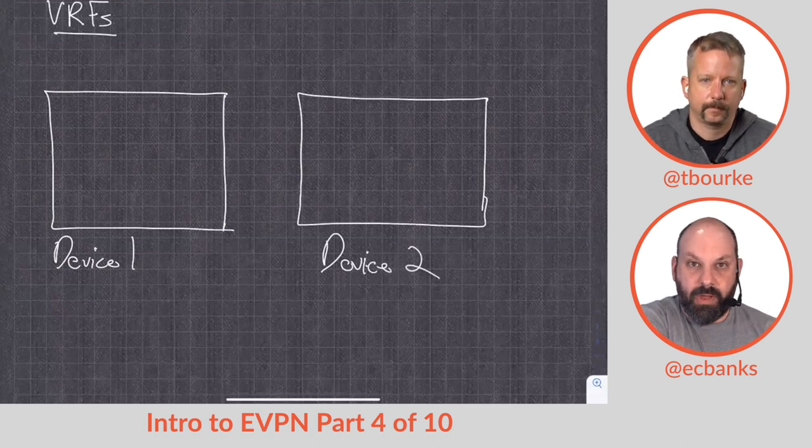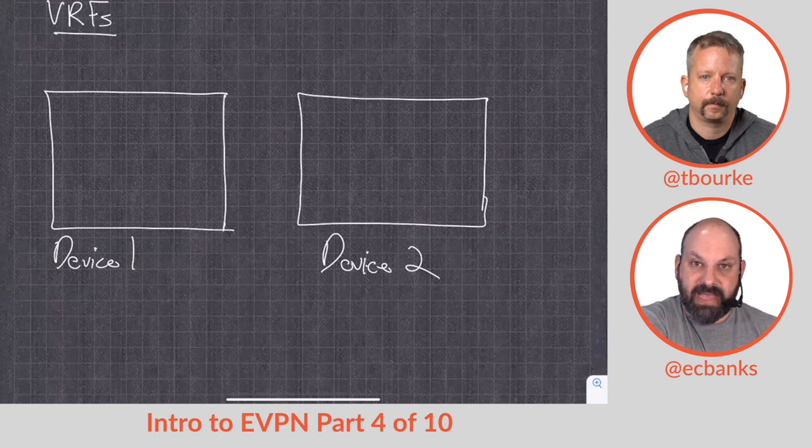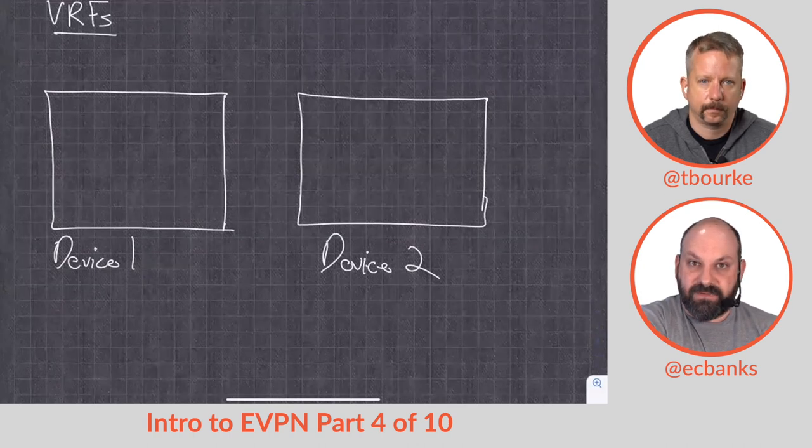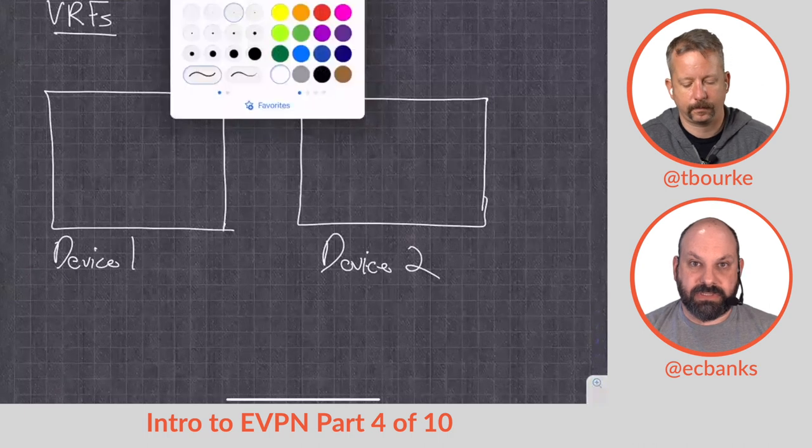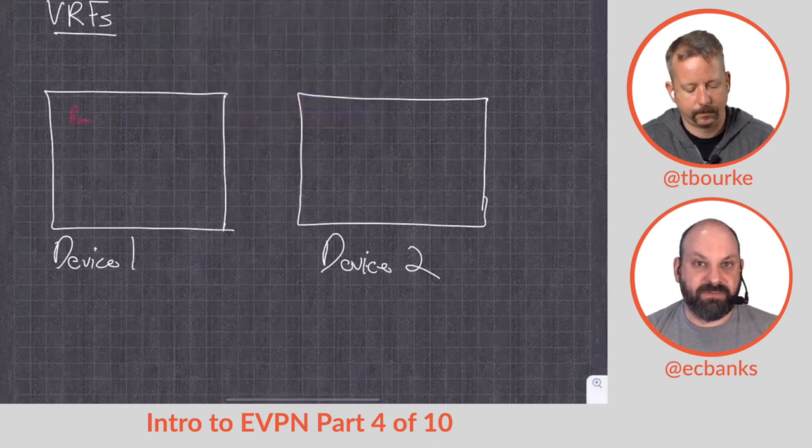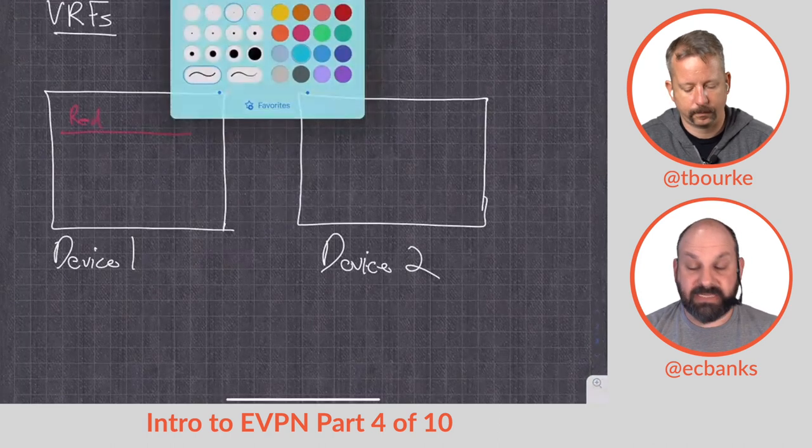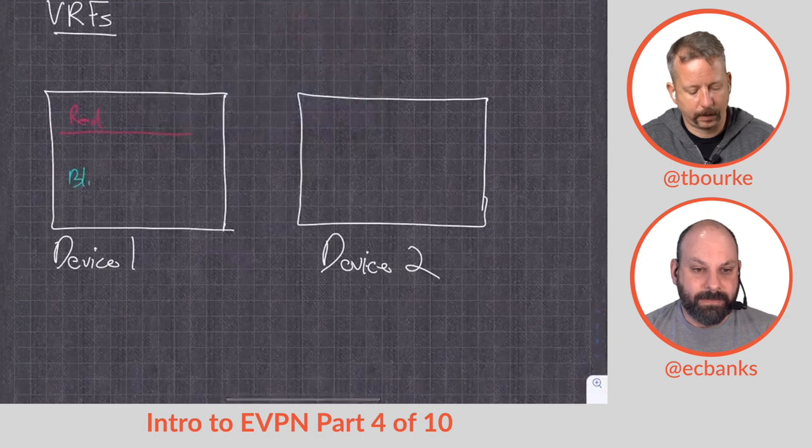So if I've got interface gig 0/1 and it's a member of VRF one, to exchange routes with something else, that other interface would need to be a member of that VRF in the same device as well. Things in a different VRF, those routes that are learned in that other VRF don't collide unless you leak between the VRFs in some way. They're meant to be completely separate routing tables.